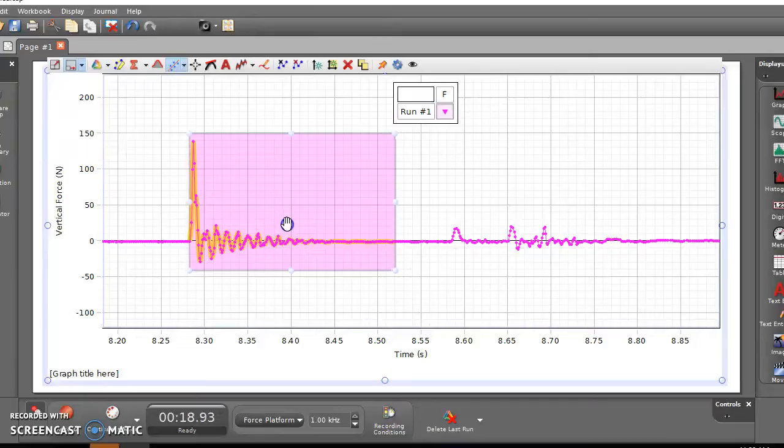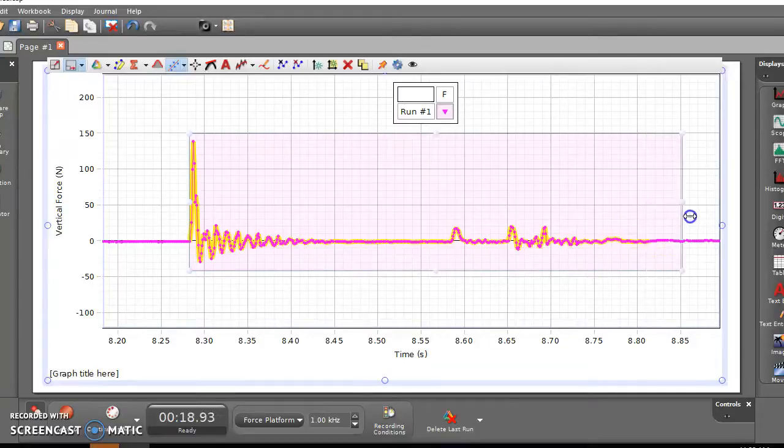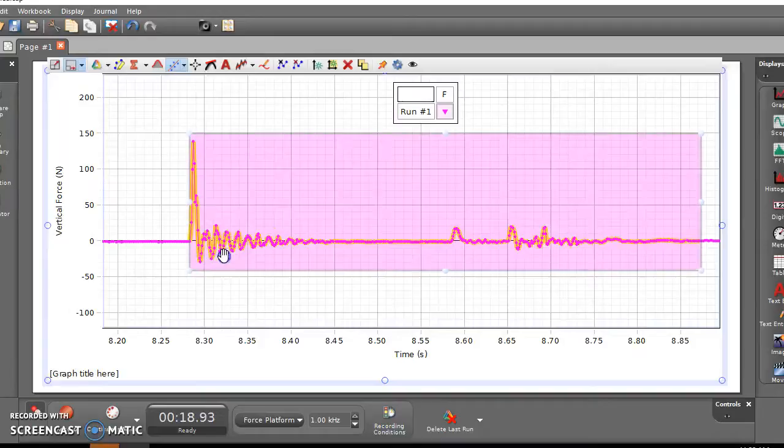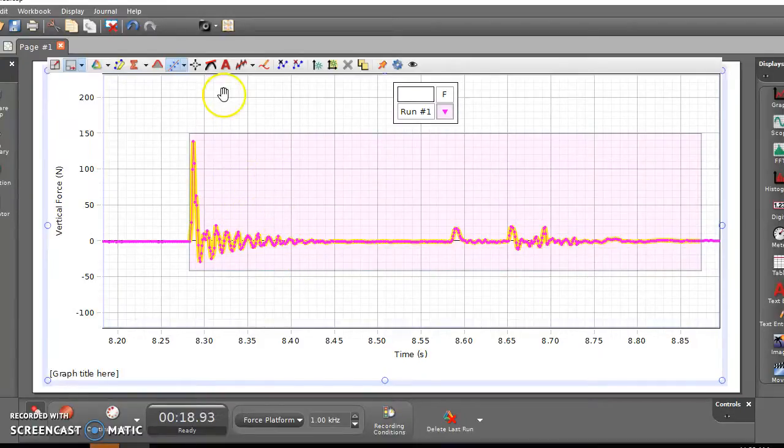Maybe slide it over just a tad so it starts right at the beginning. I'm actually going to choose all the way over to here until after it's done bouncing. If you think about a bounce, where it's making it go up and then coming back down, the net change in momentum from the bounce should be zero. So it's okay if we have all that extra selected. Then we'll click here to find area, and we get an area of 0.13 newton seconds.